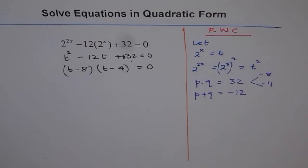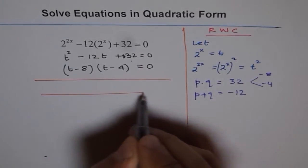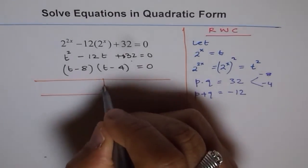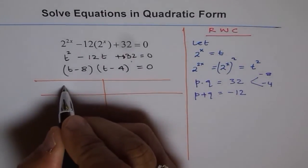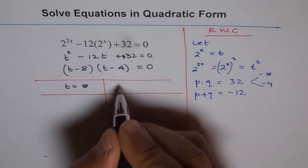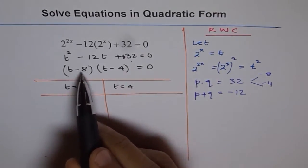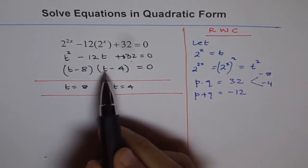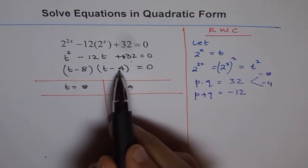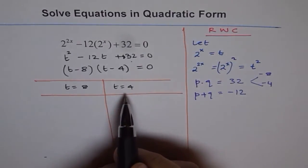So that gives us two solutions. The two solutions for us are: one, t equals 8, and the other one, t equals 4. If I put 8 here, 8 minus 8 is 0. 0 times anything is 0. And if I put 4 for t, 4 minus 4 is 0. 0 times anything is 0. So that is also a part of our solution.